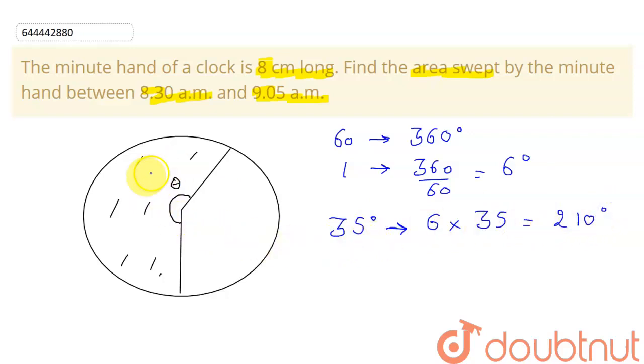So this area of this circular portion will be equal to what? This area will be equal to pi r squared into theta by 360. This is the formula for area of a sector.